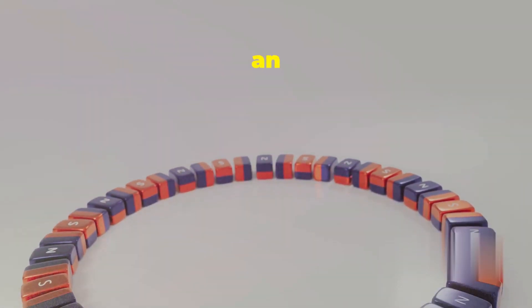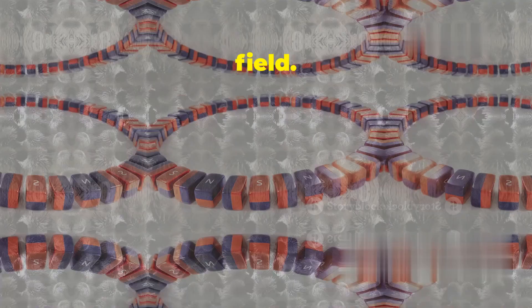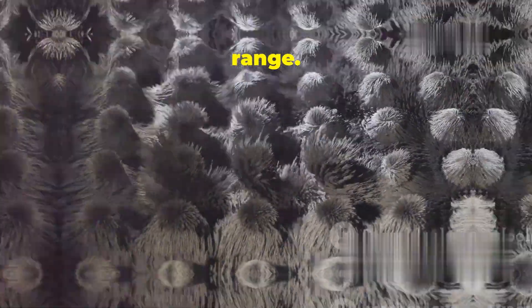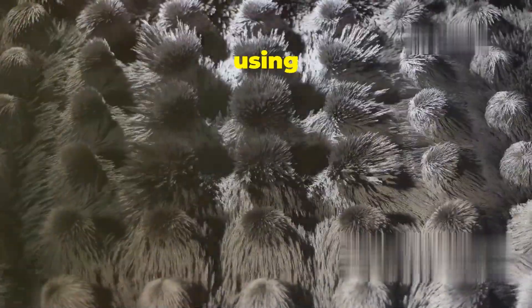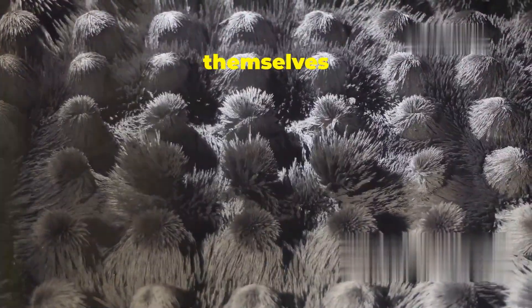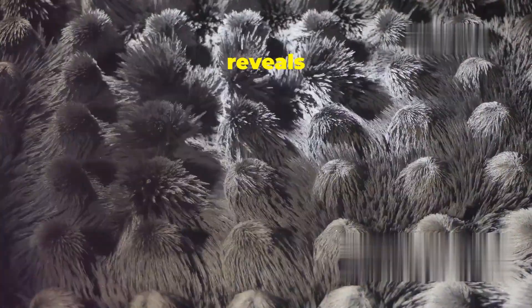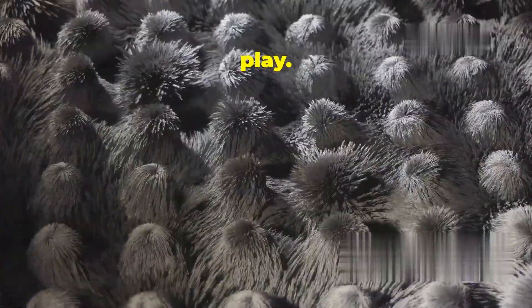Around every magnet exists an invisible region called a magnetic field. This field exerts a force on any magnetic material within its range. We can visualize this field using iron filings, which align themselves along the magnetic field lines, creating a beautiful pattern that reveals the invisible forces at play.